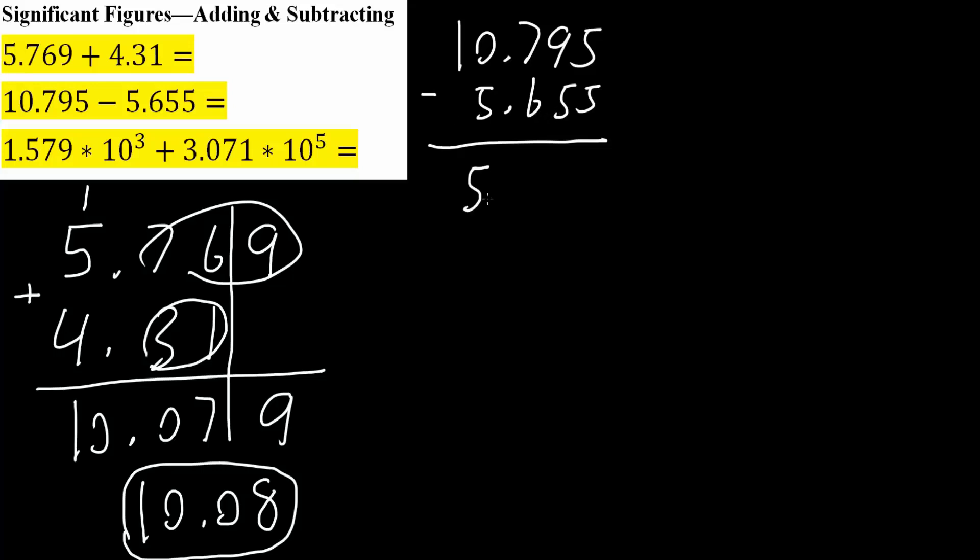And so we would get 5.14. However, we have three numbers at the end of the decimal place for each number. And so our final answer would be 5.140. So we have three.